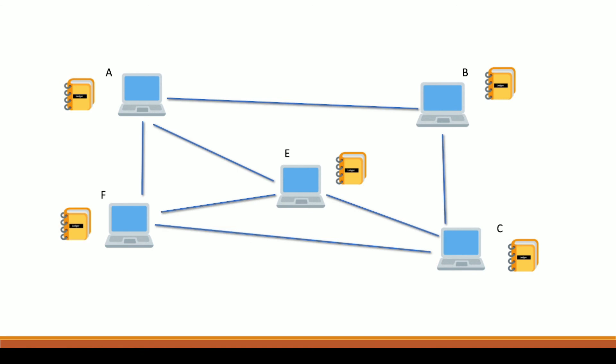But there is a catch: these transactions are in encoded format. People can see that someone has made a payment to someone, but nobody will know who that someone is. Each and every piece of data is encoded on the blockchain so that nobody can read it directly.